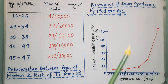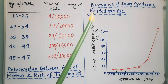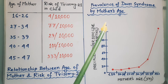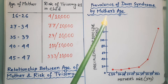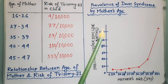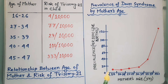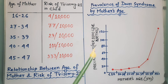This is a graphical representation showing the relationship between mother's age and prevalence of Down syndrome per 10,000 live births. It is also showing that as the mother's age increases, the Down syndrome cases are also increasing.